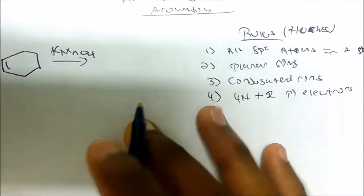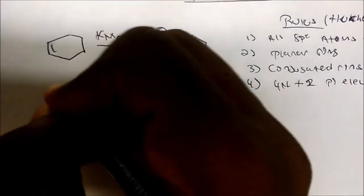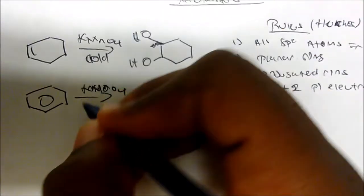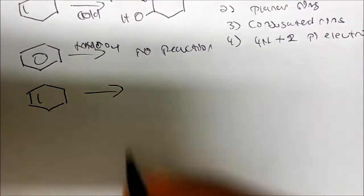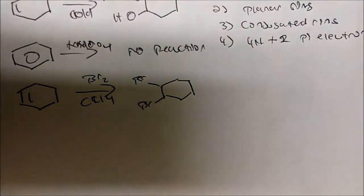Before I get started, I want to show you something. If I take this alkene and add potassium permanganate in cold conditions, I get the diol. If I take benzene and react it with potassium permanganate, I get no reaction. And if I take cyclohexene with bromine in some sort of solvent, I get the dibromo compound.